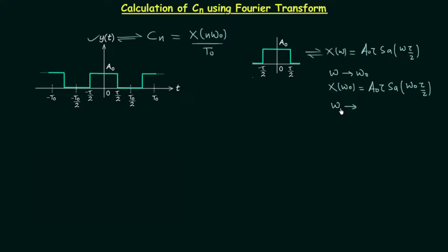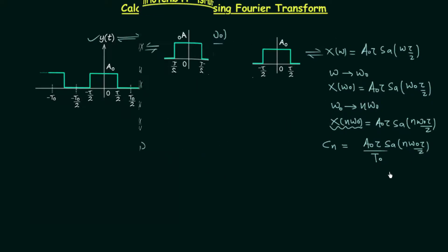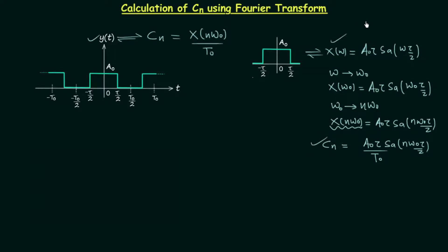Now for the nth harmonic, we replace ω0 by n·ω0. So we will have X(nω0) equal to A0·τ·sinc(nω0·τ/2). Since Cn equals X(nω0) divided by T0, the coefficient Cn is equal to A0·τ·sinc(nω0·τ/2) divided by T0. This is how we can calculate Cn using the Fourier transform for the rectangular pulse train.